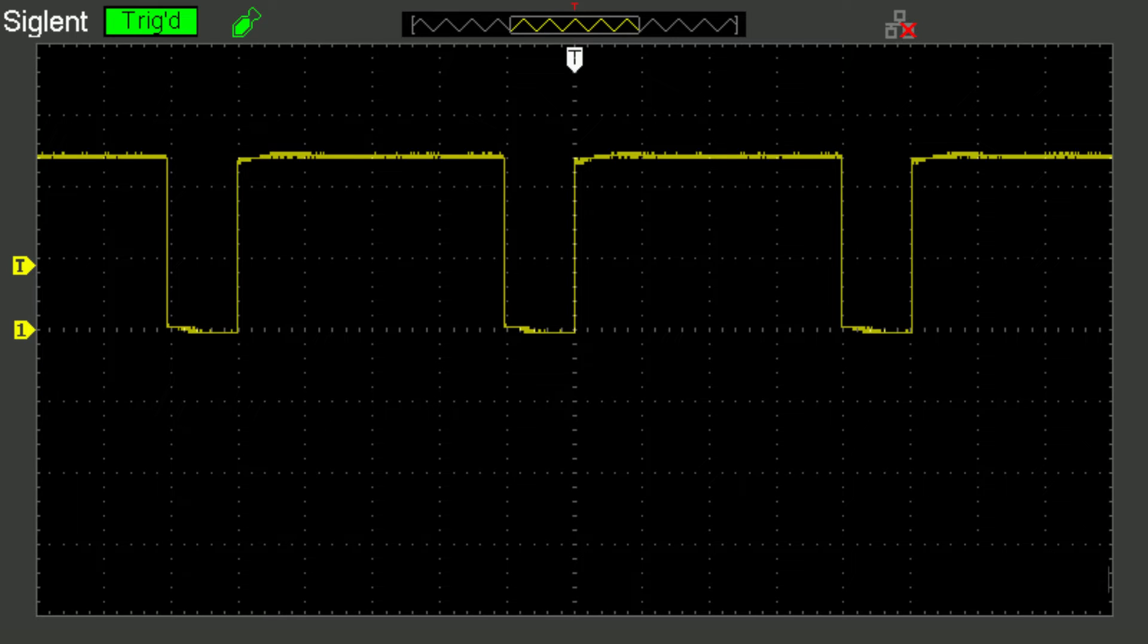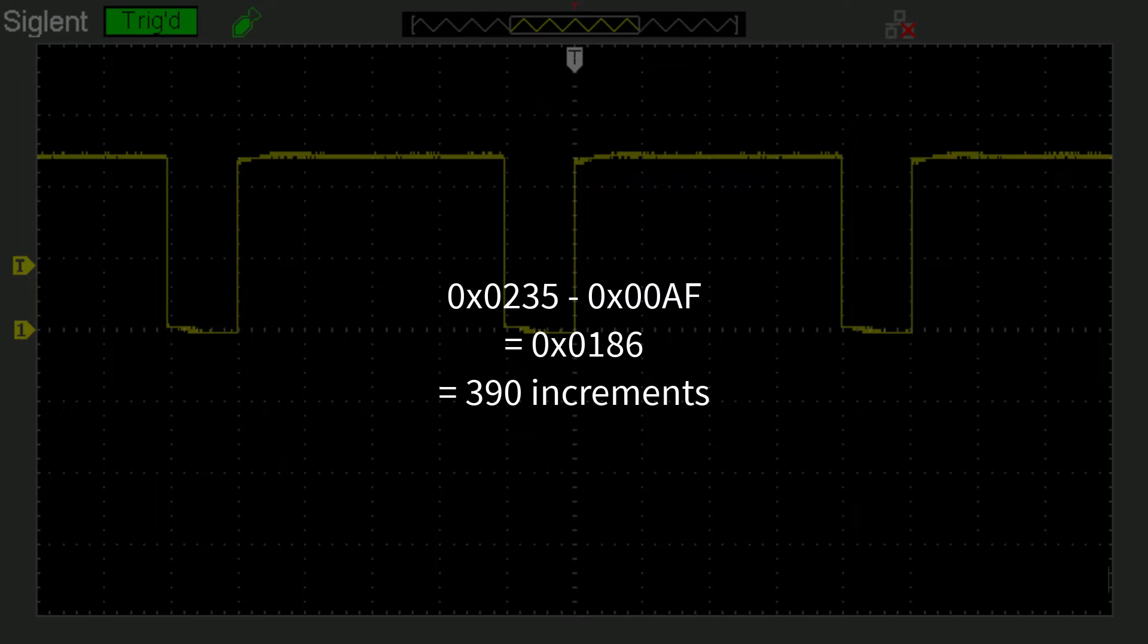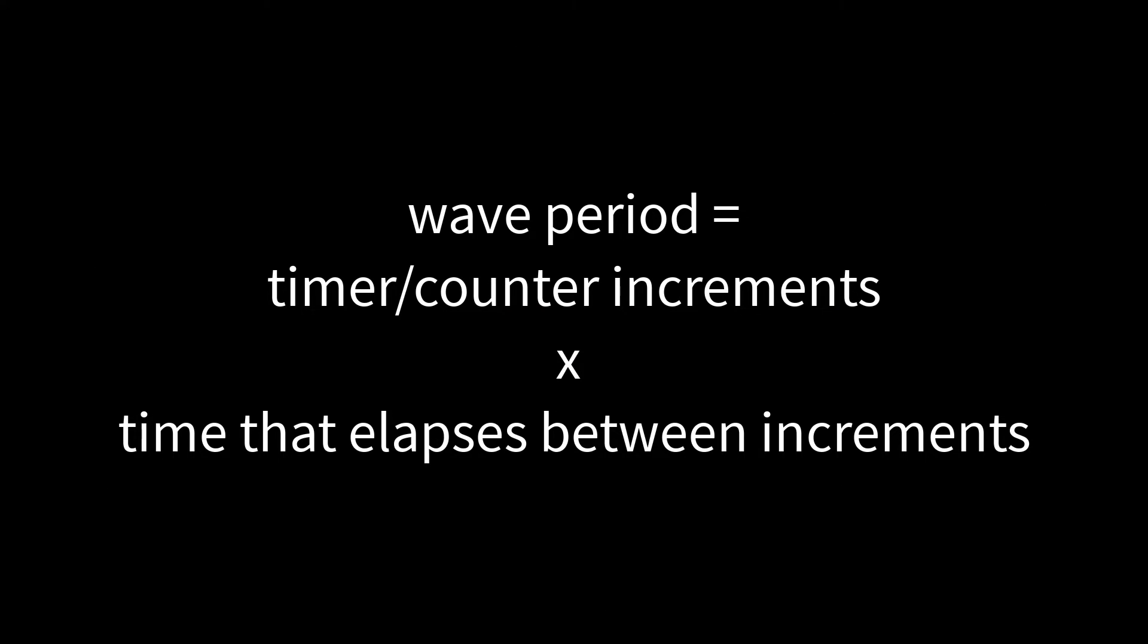The simplest thing to measure with the input capture unit is the period of the wave. The period of a square wave is the amount of time that elapses between two subsequent rising edges or between two subsequent falling edges. While either edge can be used to calculate the wave period, for simplicity's sake I'll refer to rising edges. By capturing the values in the timer counter at which subsequent rising edges occur and taking the difference, we can calculate the number of timer counter increments that occur between two rising edges. If we know how much time elapses between increments, we can calculate the wave period.